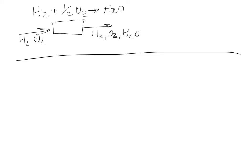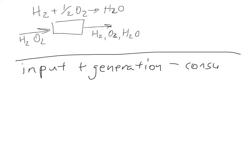Let me write out the first method, which is using a material balance equation, similar to what we've done earlier in the term — also detailed in chapter 4 of the book. The equation is: input plus generation minus consumption equals output. This is just the generic material balance equation for a given species. We might apply this equation for hydrogen, for oxygen, or for water.